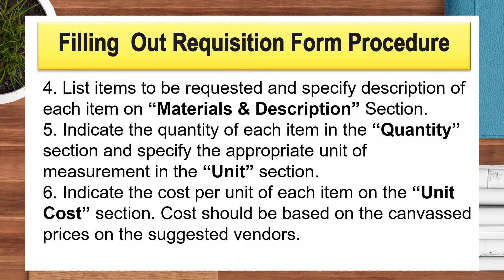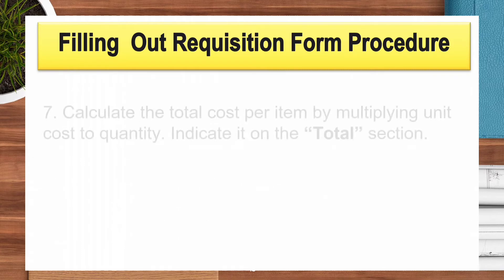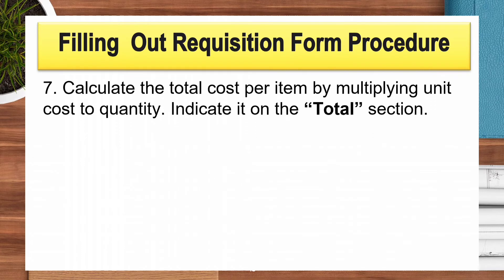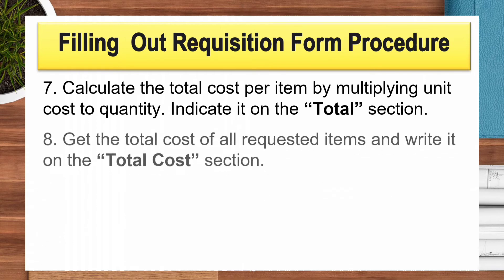Six, indicate the cost per unit of each item on the unit cost section. Costs should be based on the canvas prices from the suggested vendors. Seven, calculate the total cost per item by multiplying unit cost by quantity. Indicate it on the total cost section.